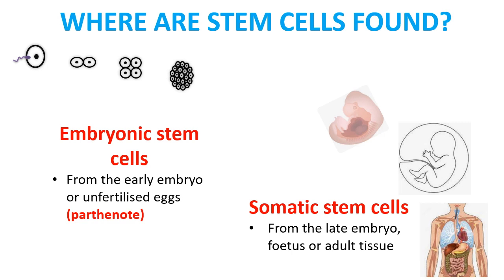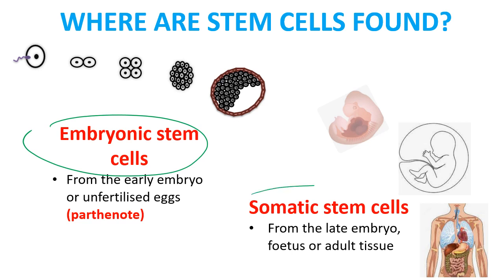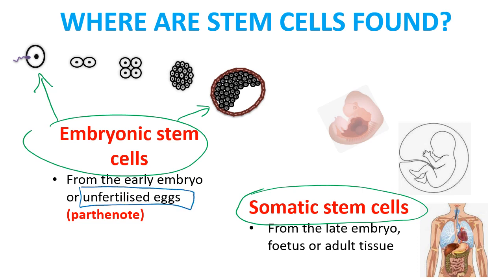Stem cells are found in two places: either in the early embryo, or in the late embryo, or in a child or adult. Embryonic stem cells come from the early embryo — starting from one fertilized egg, mitosis happens and the embryo develops. Scientists can also use unfertilized eggs, modify them so they become a stem cell and grow into a few types of cells; that's called a parthenote.